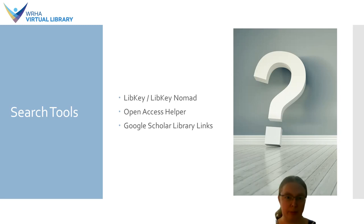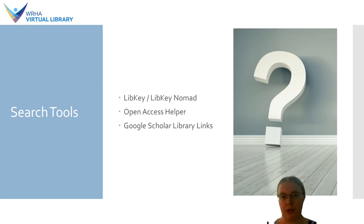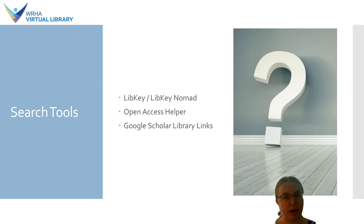Open Access Helper is a similar idea. It comes as either a browser extension or as a mobile app if you're looking for something mobile friendly. This allows you to quickly get access to full text through the library, and also provides access to open access versions of articles — for instance, versions deposited on personal websites or institutional repositories. Those get indexed and served to you through this tool, helping you find not only material available through the library but also stuff available for free online that you might not otherwise have found.